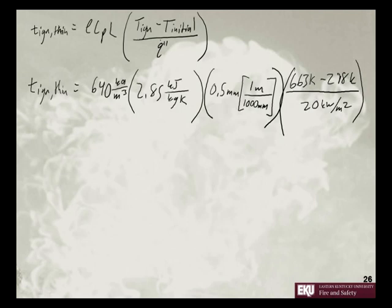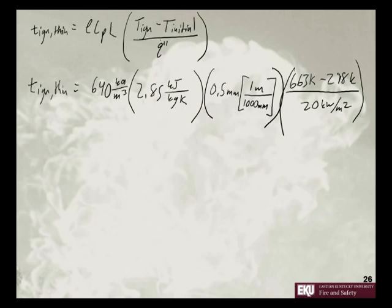When we put this into our calculator, we have 640 times 2.85 times 0.5 divided by 1000, times the quantity 663 minus 298, close parentheses, divided by 20. We get an ignition time equal to 16.6 seconds.